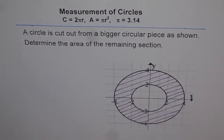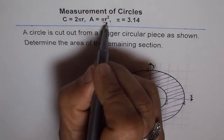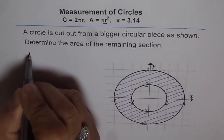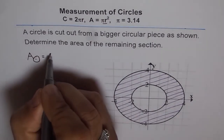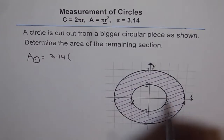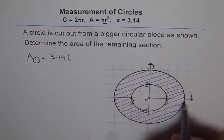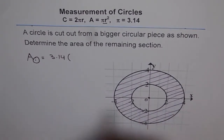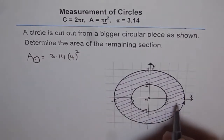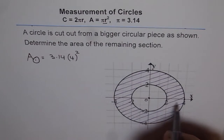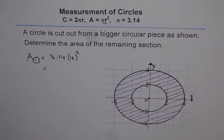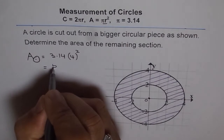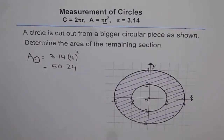What is the radius of the outer circle? To find area we need the radius, since area is pi r squared. So area of big circle is pi r squared. The value of pi is 3.14, and in this case the radius goes from 0 to 4, so the radius is 4 units. So it is 3.14 times 4 squared, which is 16. So 3.14 times 16 equals 50.24. That is the area of the big circle.